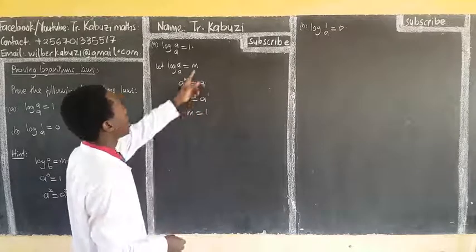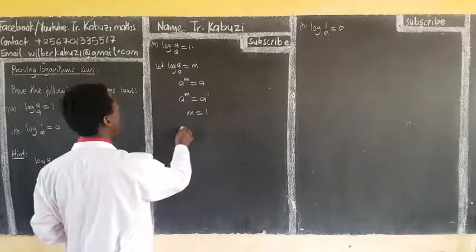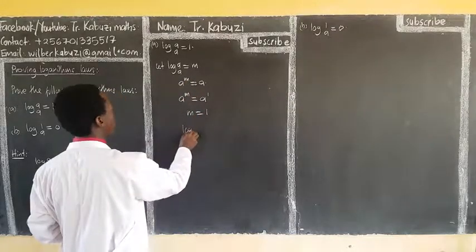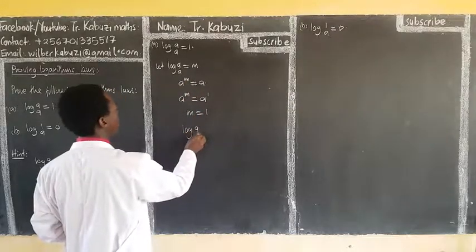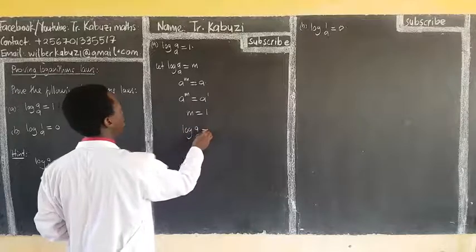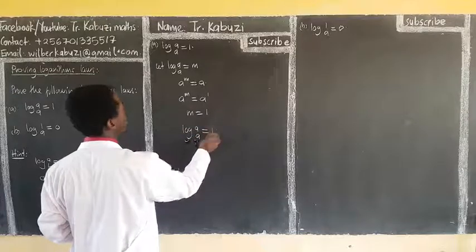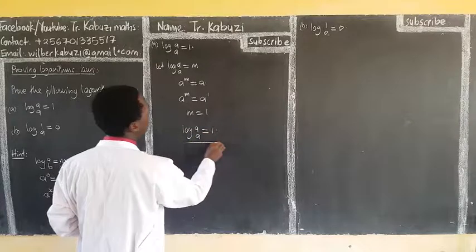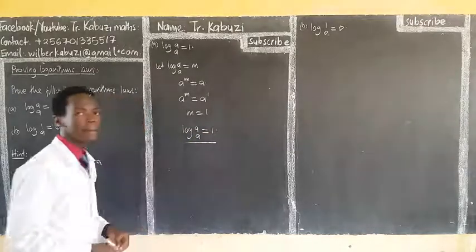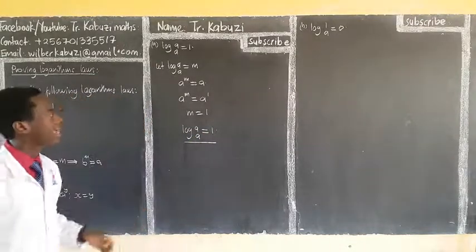But what was my M? It was log A to base A. It means that log A to base A is equal to 1. And the proof is done, just like that.